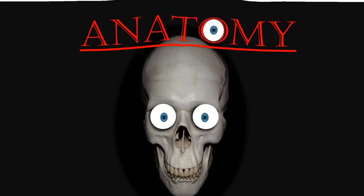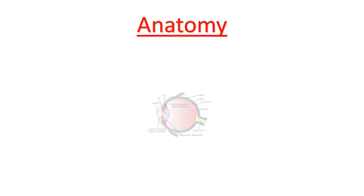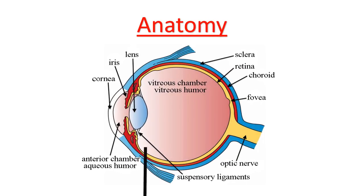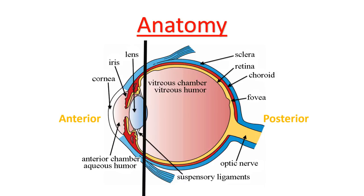The eye is anatomically divided into the anterior and the posterior segment. The anterior segment is made up of the cornea, iris, and lens. The posterior segment includes the vitreous, retina, choroid, and the outer white shell called the sclera.